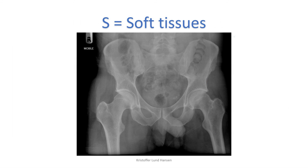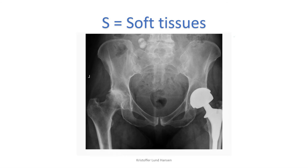The last point — S stands for soft tissue. The main things you will do here are to notice any swellings or effusions (remember effusion is just accumulation of fluid), and you should also notice foreign bodies or calcifications. Here we have a case of a foreign body which is a hip joint replacement.